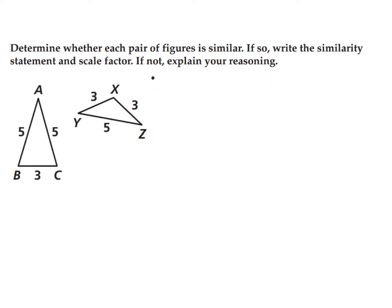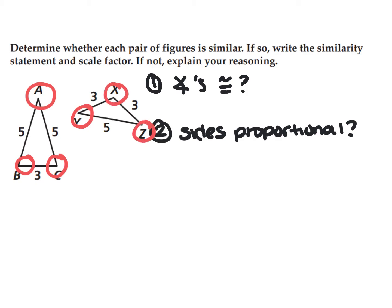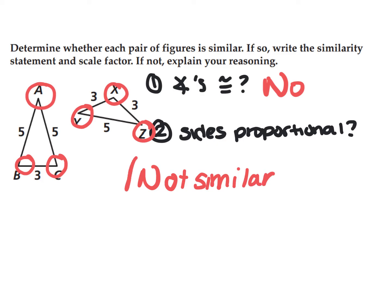In the next example, I have to determine if the figures are similar. We don't know anything about any of these angles — there is no information given. So we can't say the angles are congruent; we have to say no. My answer is not similar, because even if the sides are proportional, I don't know anything about the angles.